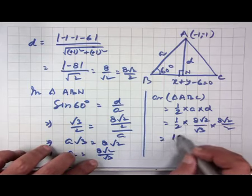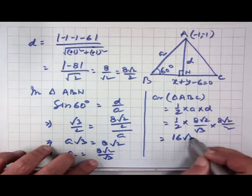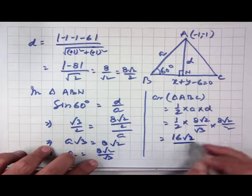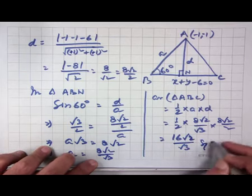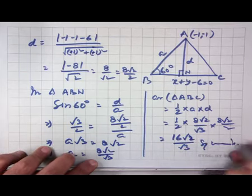Area of triangle ABC = (1/2)·a·D = (1/2)·(8√2/√3)·(8√2/2) = 16·2/(2√3)... = 32√3/3 square units, confirming our earlier result.